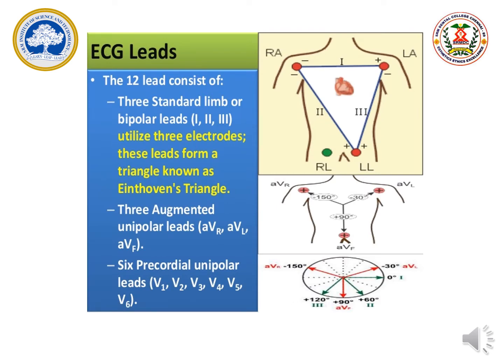The twelve-lead system consists of three standard limb bipolar leads — one, two, and three — utilizing three electrodes. These leads form a triangle known as the Einthoven triangle. It is named after the scientist Einthoven who discovered it. It looks like an inverted triangle.